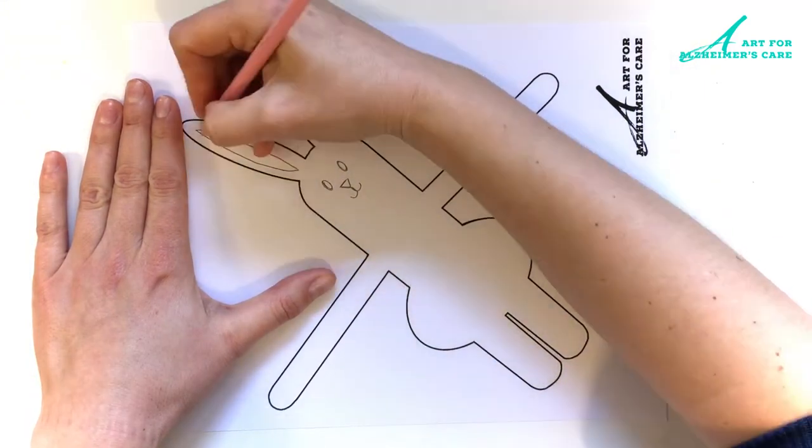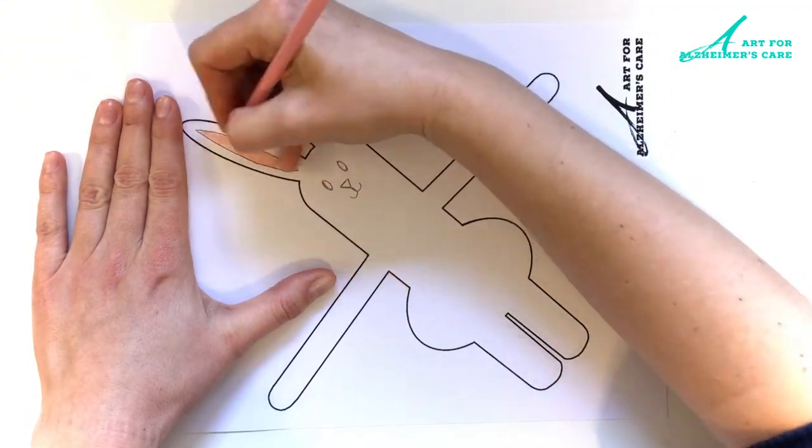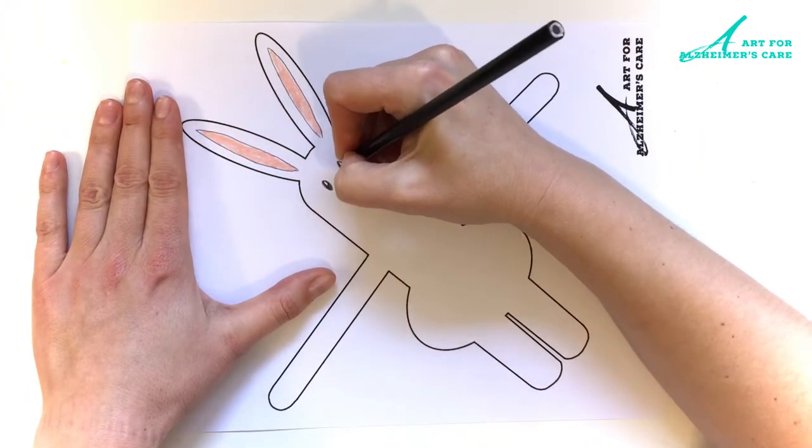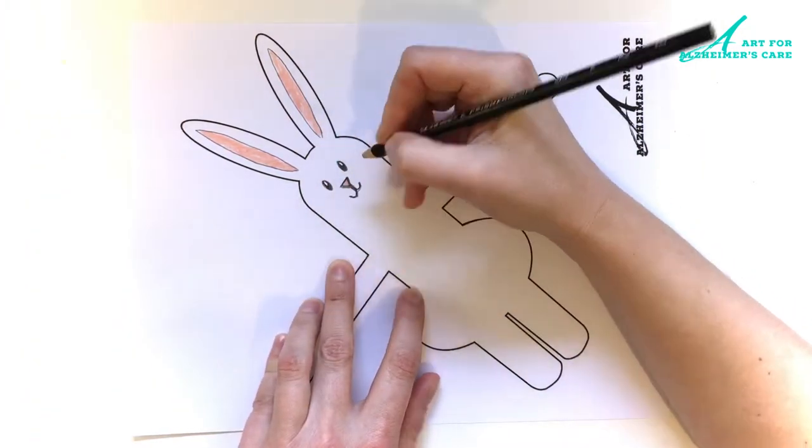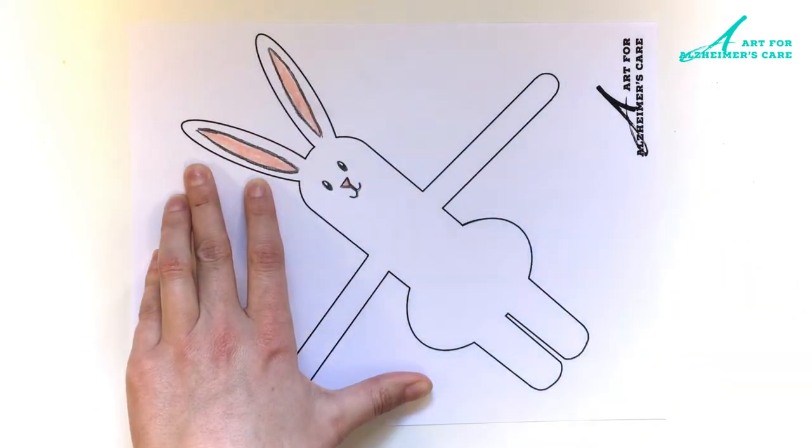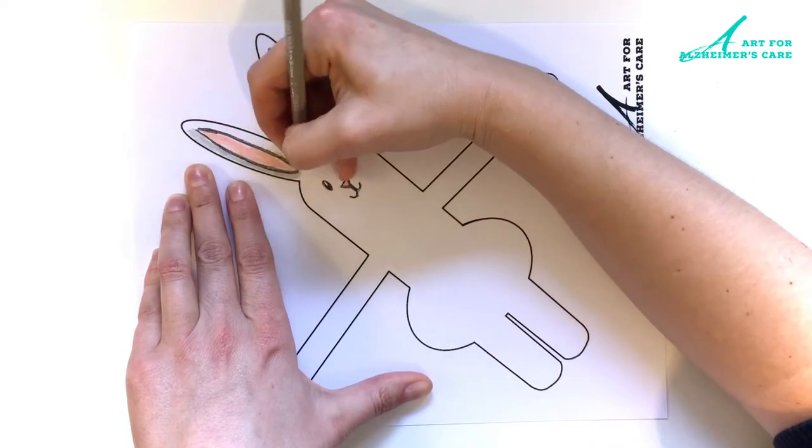So I'm starting with the front side here. I'm going to make a little face, add a few details, and then start coloring. I am using pencil crayons for this project.